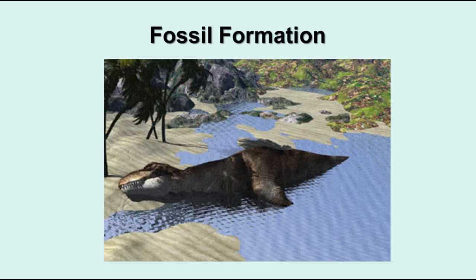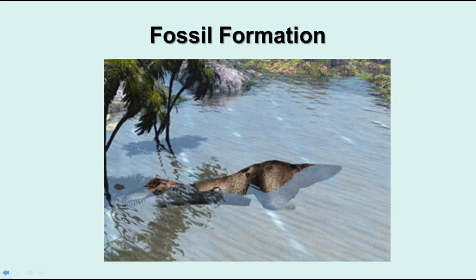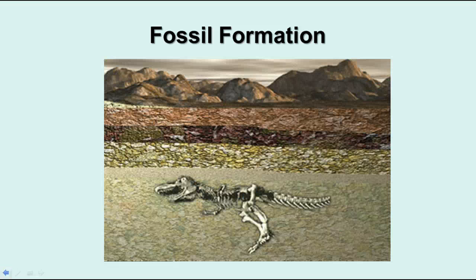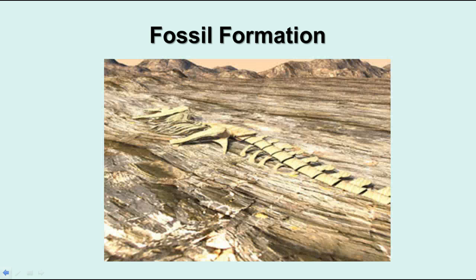So how do fossils form? First of all, the animal has to die in an area where soil can be deposited on it — oftentimes that happened in rivers or tidal areas. Over time, water and sediment covered the remains and the animal got buried deeper and deeper. Then the bone was replaced with minerals from the surrounding rocks. Eventually, through uplift and weathering, the fossil came to the surface so it could be collected.